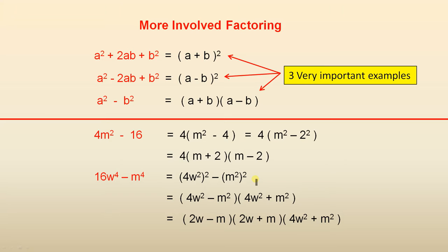16w⁴ minus m⁴. That's (4w²)² minus (m²)². Which is the same as here. So we have (4w² - m²)(4w² + m²).